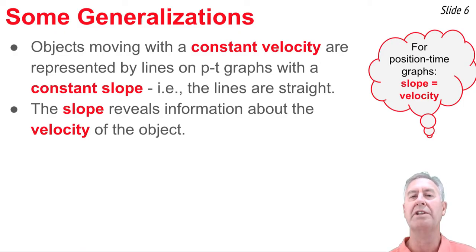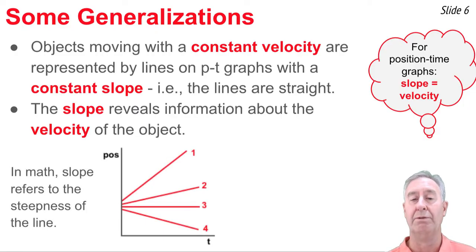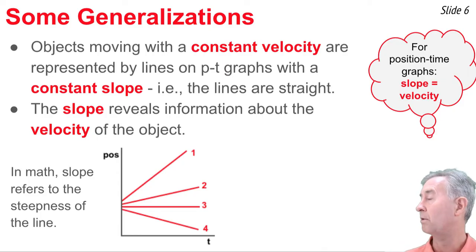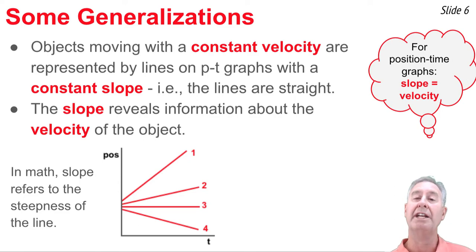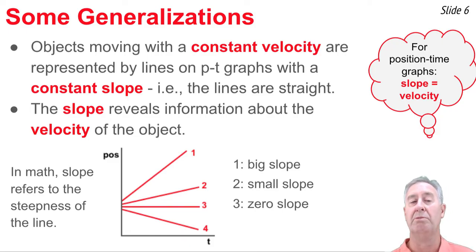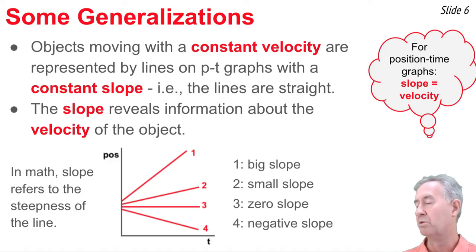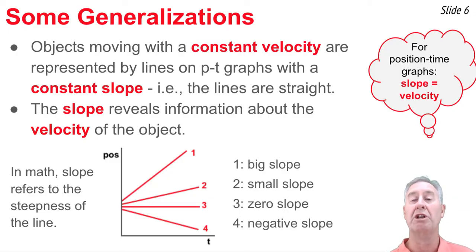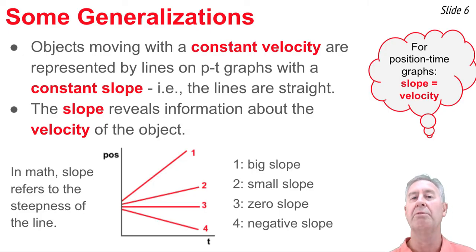So exactly what does slope mean and how can we interpret a line with slope? In math, slope refers to the steepness of the line. On a position-time graph with four different lines, line number 1 has a large positive slope, line number 2 has a small slope, line number 3 has zero slope, and line number 4 has a negative slope. Being able to look at a position-time graph, see a line, and interpret information about motion from its slope is mission critical as we move forward.